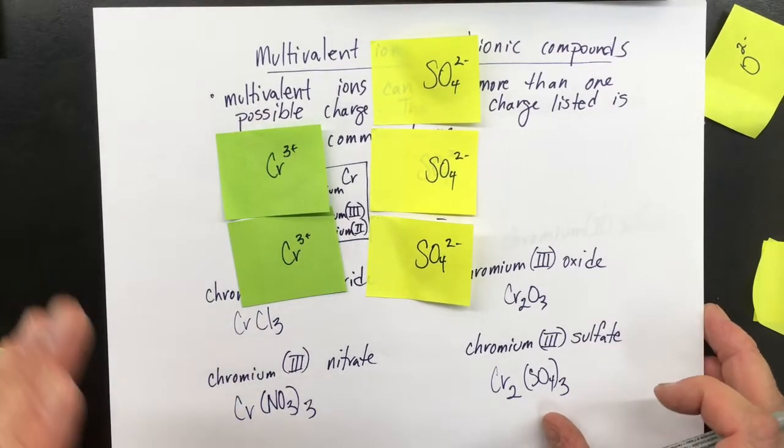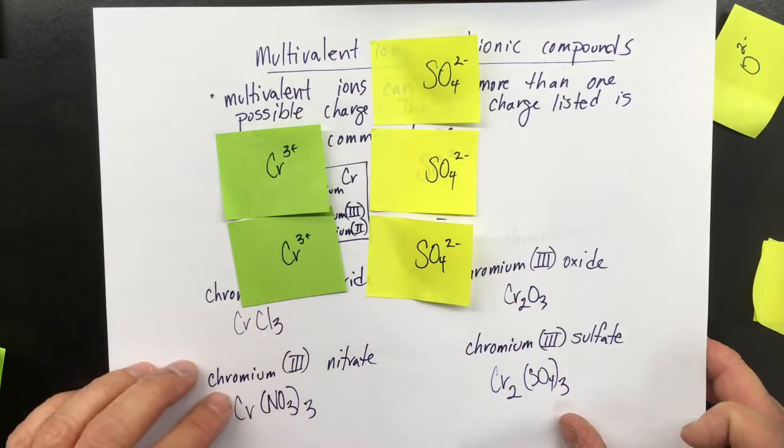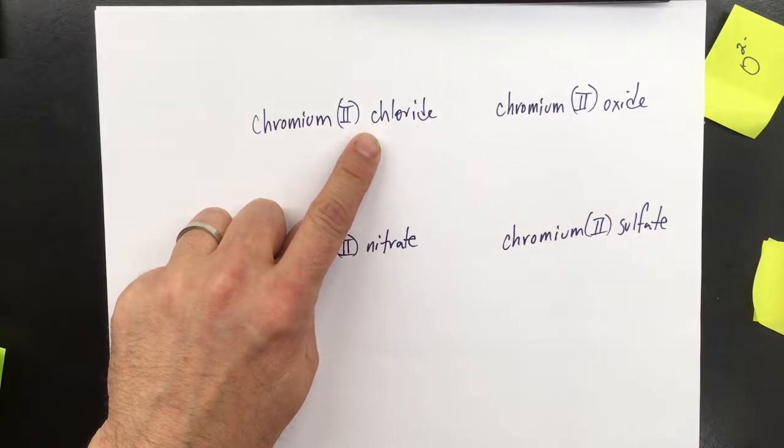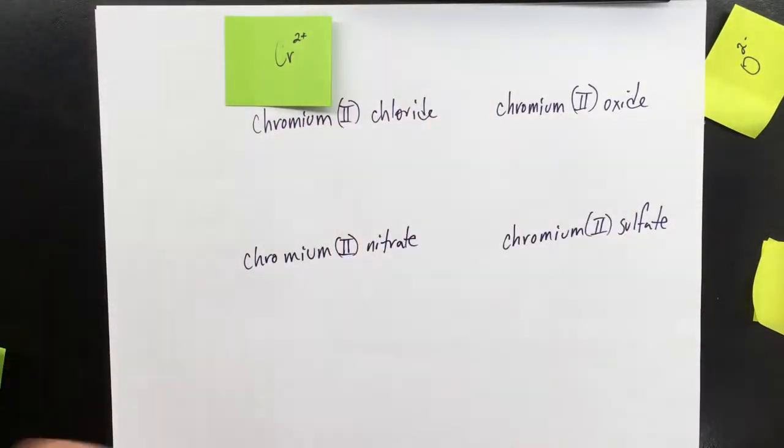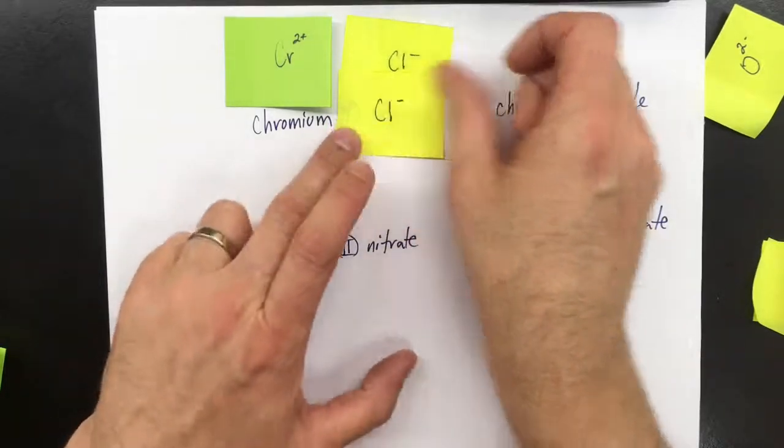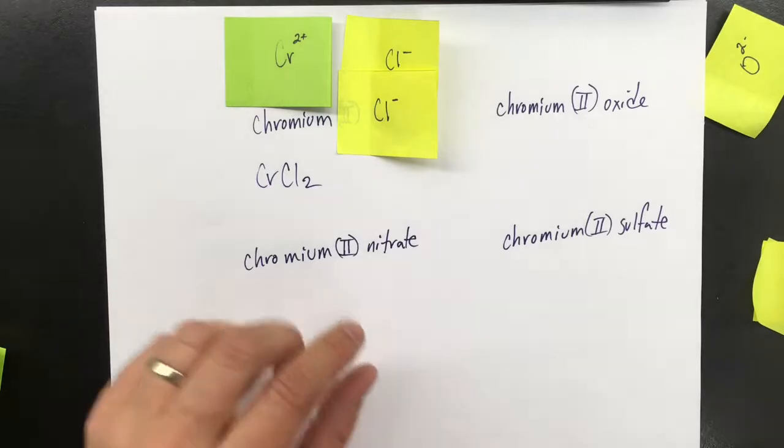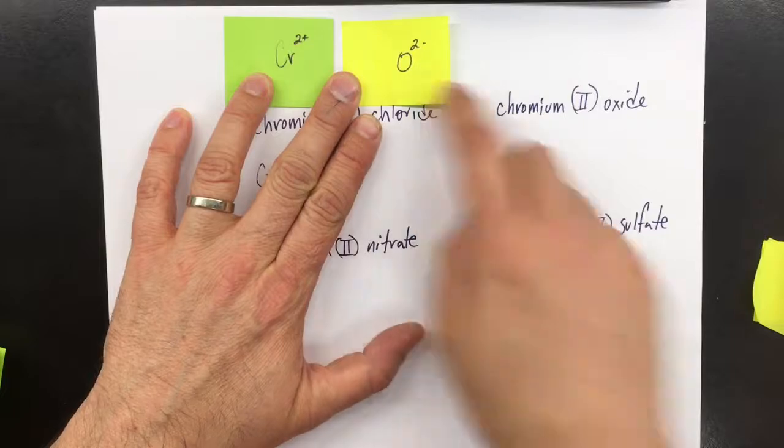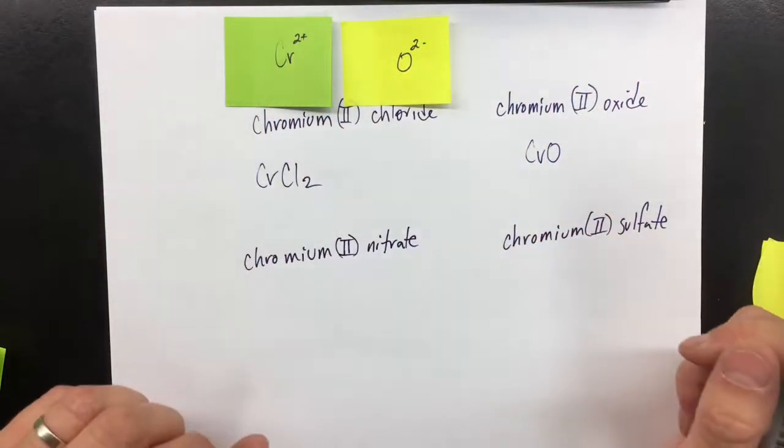The balancing out the charge is the exact same process we've done. The difference is that these ions can have more than one charge. So chromium(III) could also be chromium(II). Chromium(II) has a charge of 2+. If we go back to our chlorides, if I have 1- and 2-, I get CrCl2. And if I have chromium(II) oxide, oxide has a 2- charge. I have 2- and 2+. This is going to be CrO - one chromium(II) and one oxide.